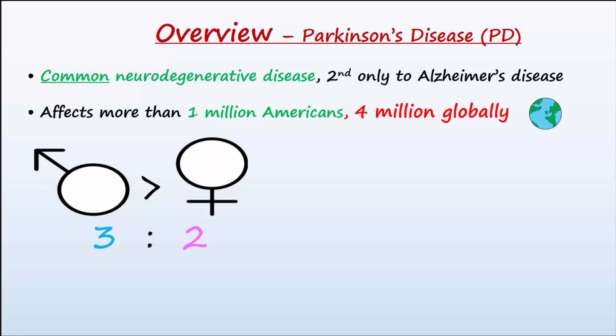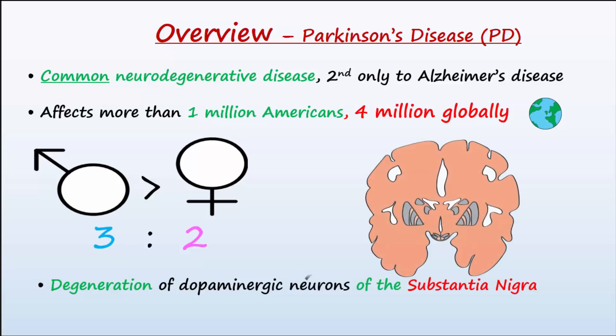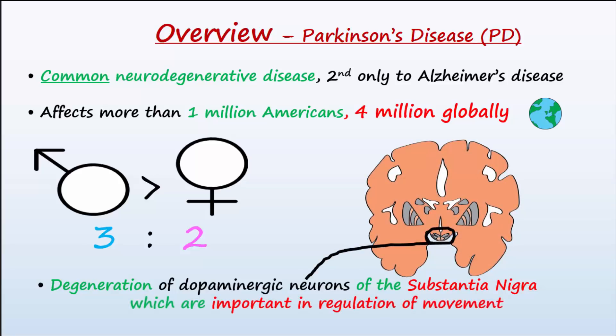Parkinson's disease comes about with degeneration of dopaminergic neurons in the substantia nigra of the midbrain. These neurons are important in regulating movement.